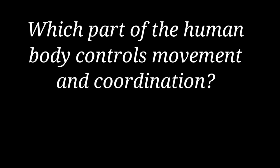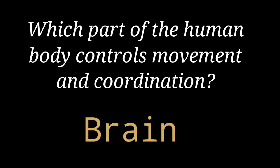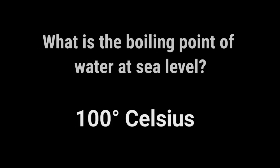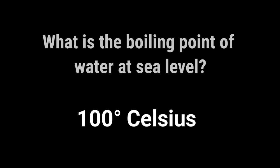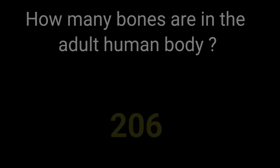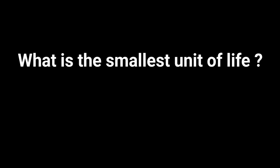Which part of the human body controls movement and coordination? Brain. What is the boiling point of water at sea level? 100 degrees Celsius. How many bones are in the adult human body? 206. What is the smallest unit of life? Cell.